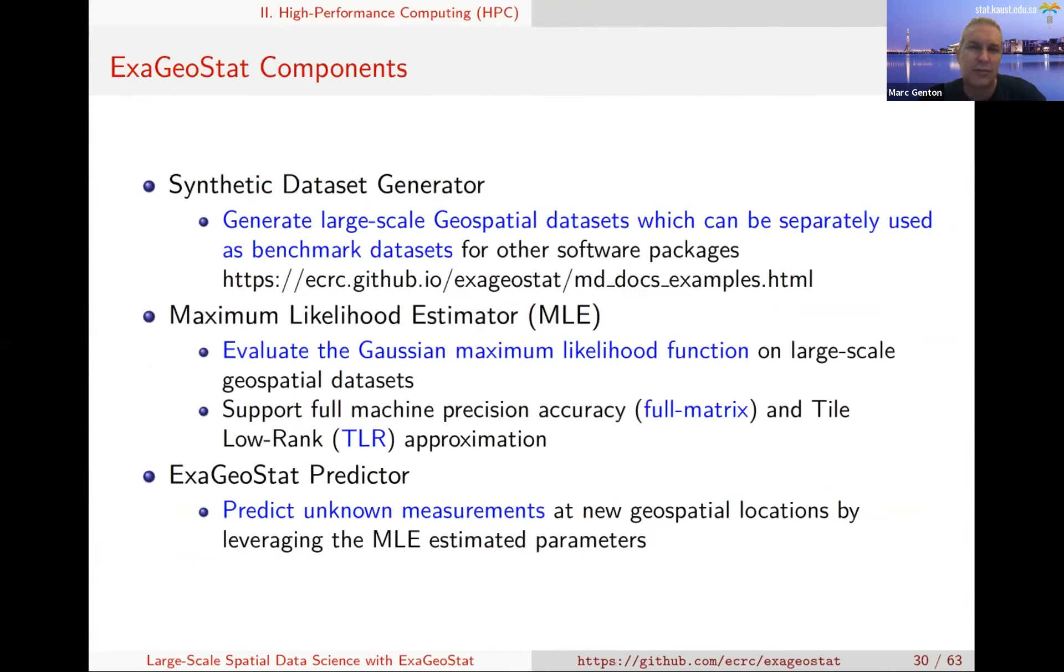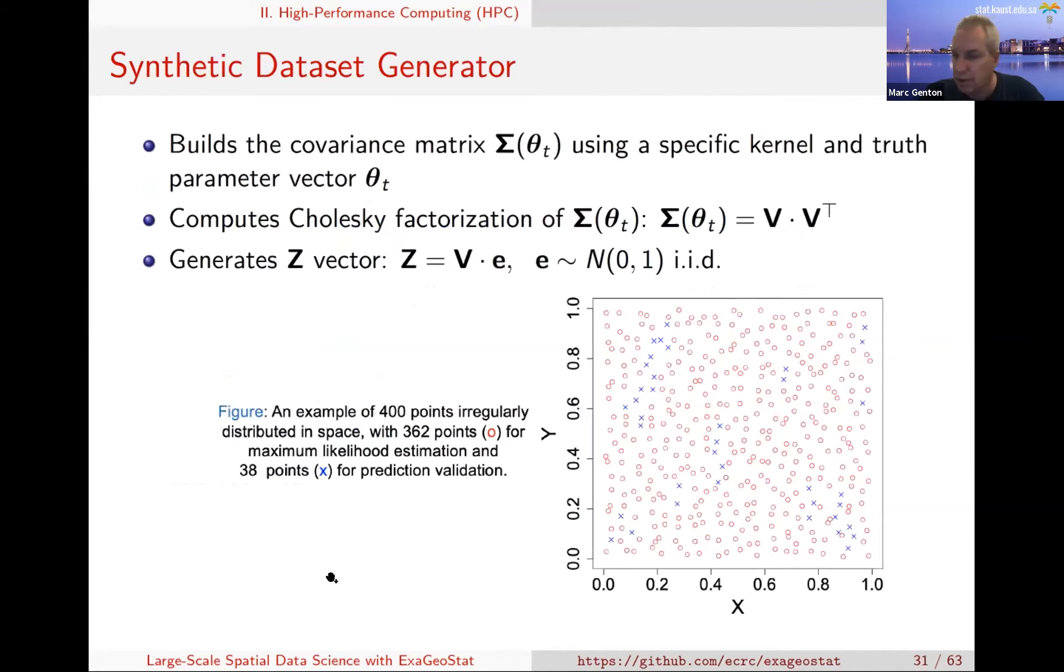It has three main components. One is about simulation - you can simulate realization from large-dimensional realization of random fields, that's the dataset generator part. There's an MLE part where you can do Gaussian MLE but also some non-Gaussian. You can do exact computation, but there is also some approximation with mixed precision accuracy and tile low rank approximation. And then there's the prediction that does Kriging at new spatial locations.